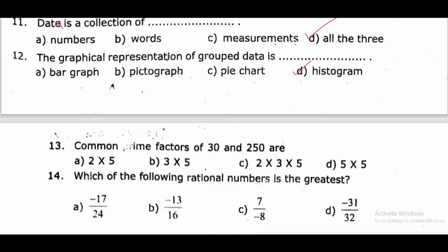The common prime factors of 30 and 250 are. For 30: prime factors include 2, 3, and 5. For 250: prime factors include 2 and 5. The common prime factors are 2 into 5. So option A.